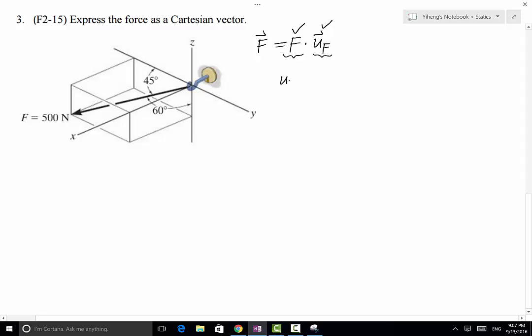Recognize that uf equals cosine alpha i plus cosine beta j plus cosine gamma k. Alpha, beta, gamma are the angles made by the force vector with the positive x, y, and z axis respectively.